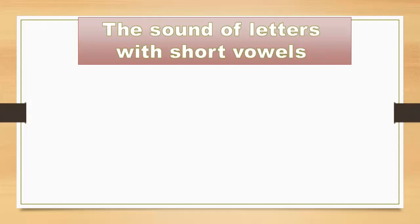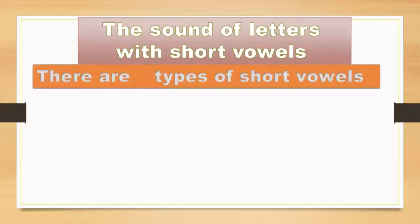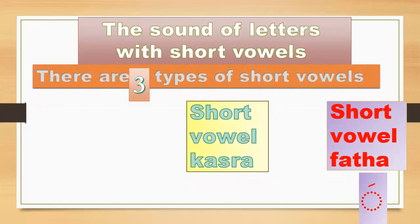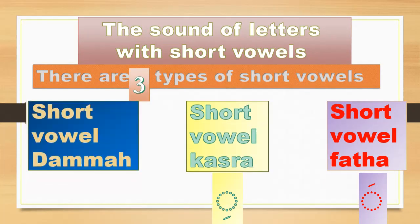The sound of letters with short vowels. There are three types of short vowels. Short vowel fatha — a small slash on the top of the letter. Short vowel kasrah — a small slash under the letter. Short vowel dhamma — a small comma on the top of the letter.